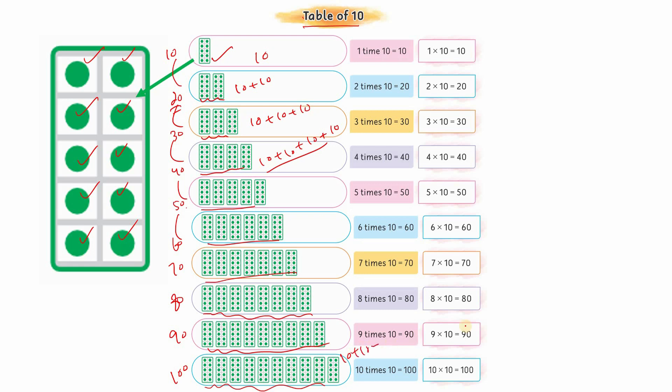Now look at it from the multiplication table point of view. One time ten, the answer is ten. Two times ten is twenty. Three times ten is thirty. Four times ten equals forty. Do you see what's happening?